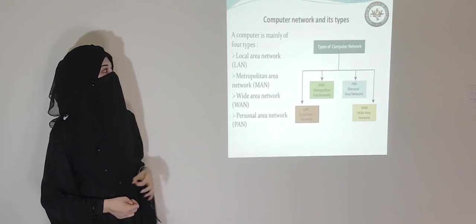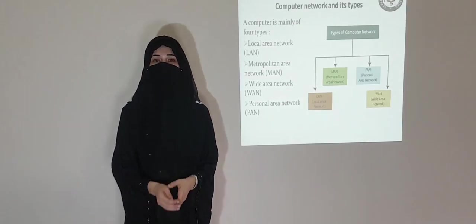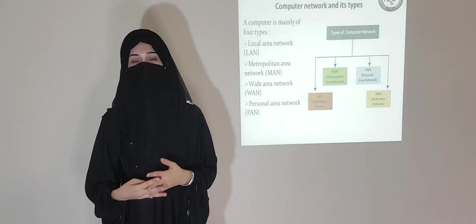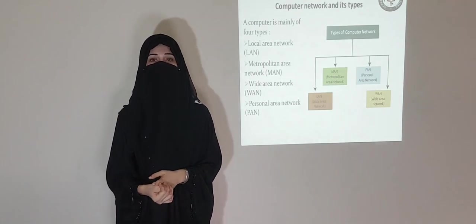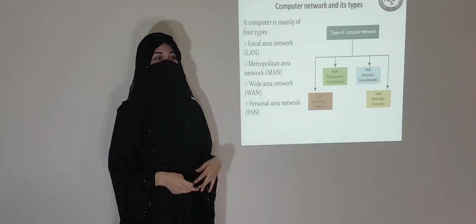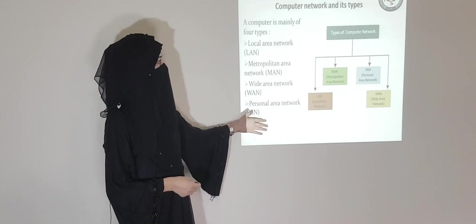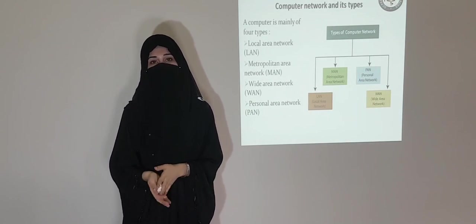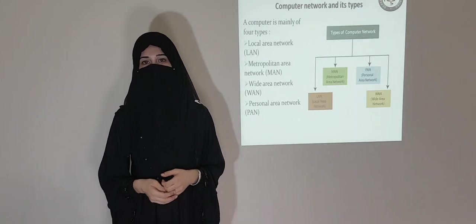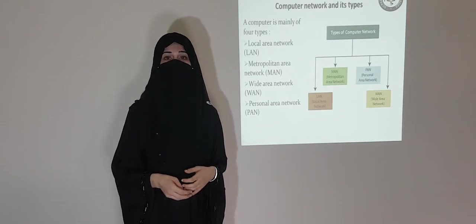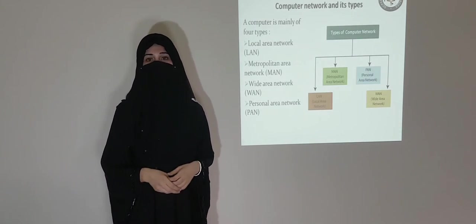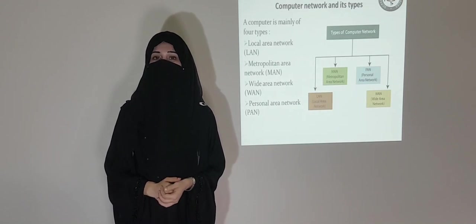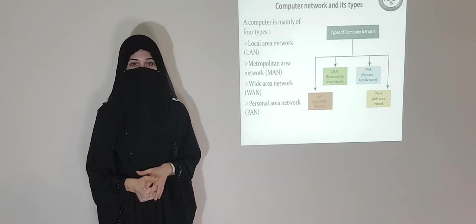Computer network and its types — we have already discussed what a computer network is. Now we will discuss its types. There are basically four types: the first one is LAN, then MAN, then WAN, and PAN. LAN stands for Local Area Network, MAN stands for Metropolitan Area Network, WAN stands for Wide Area Network, and PAN stands for Personal Area Network.